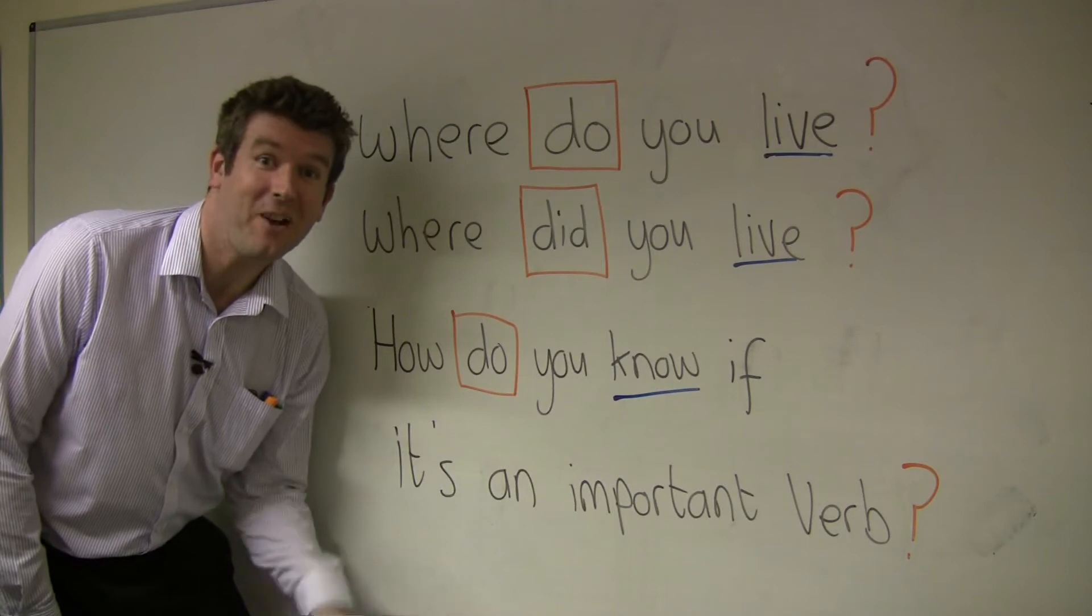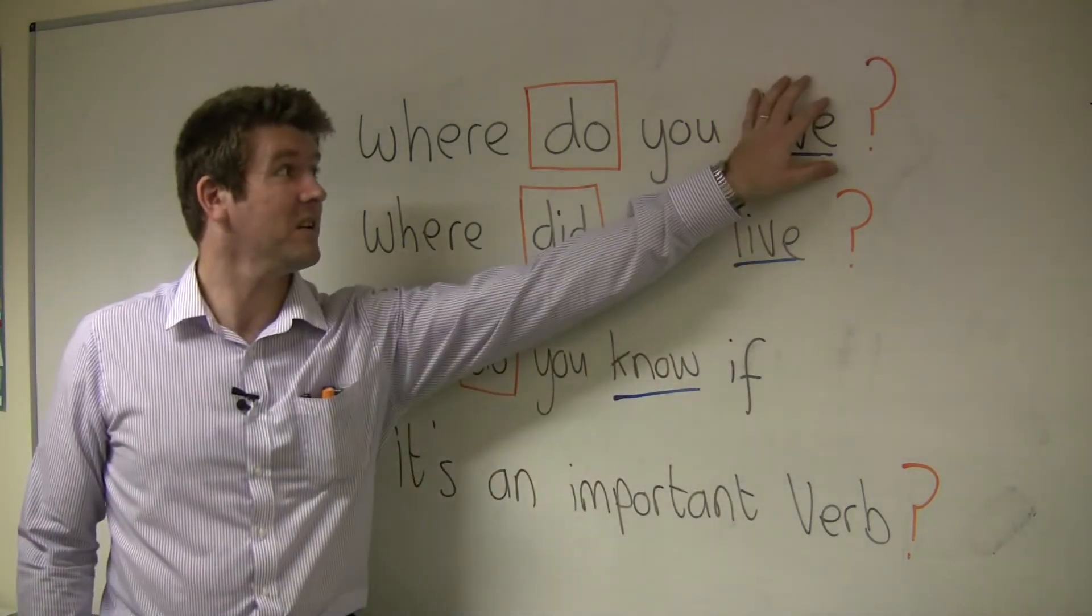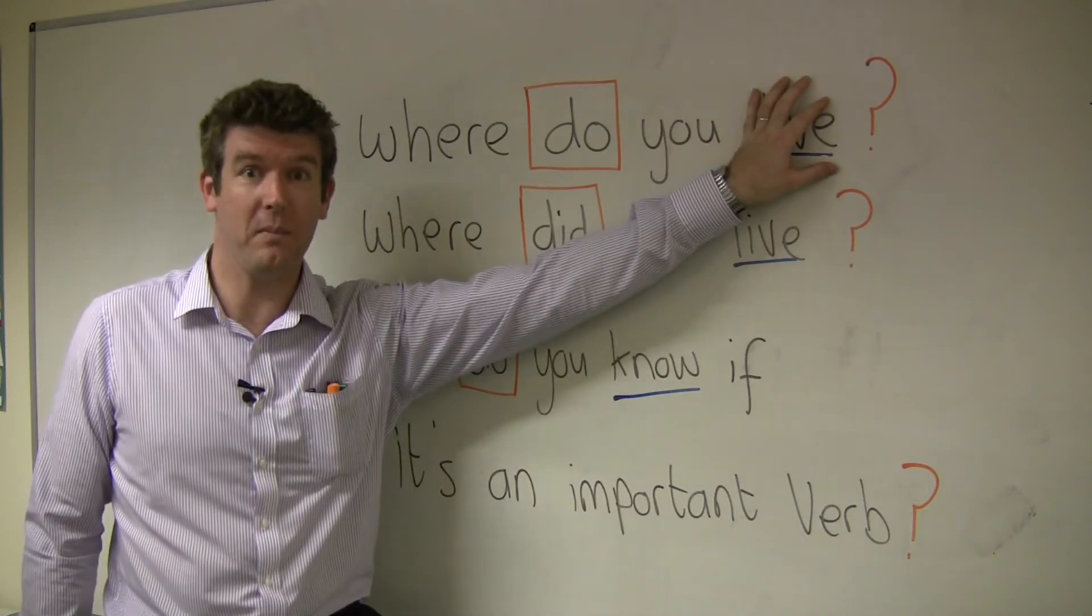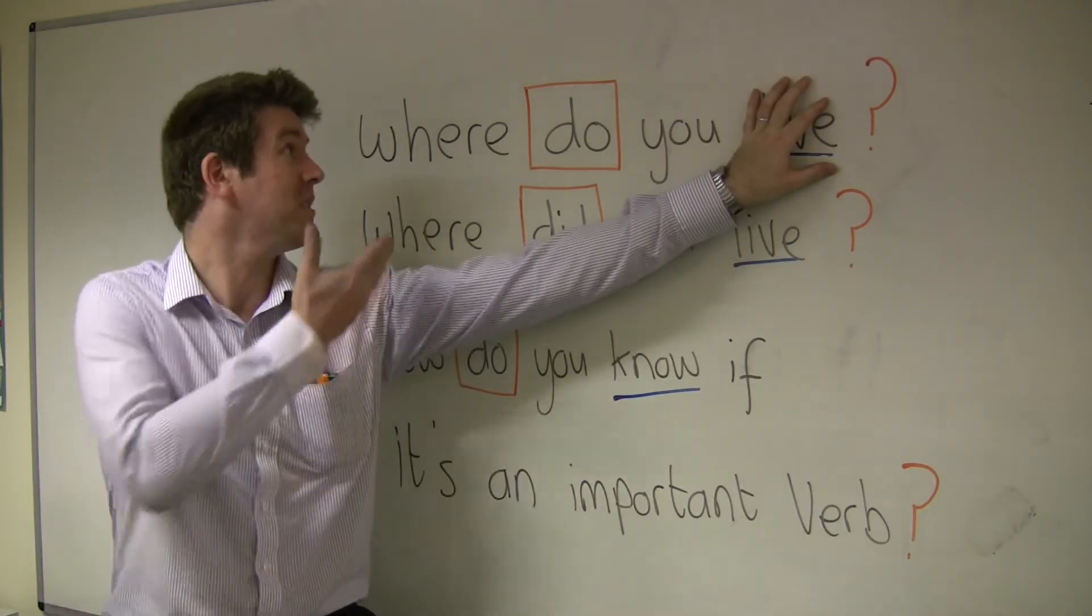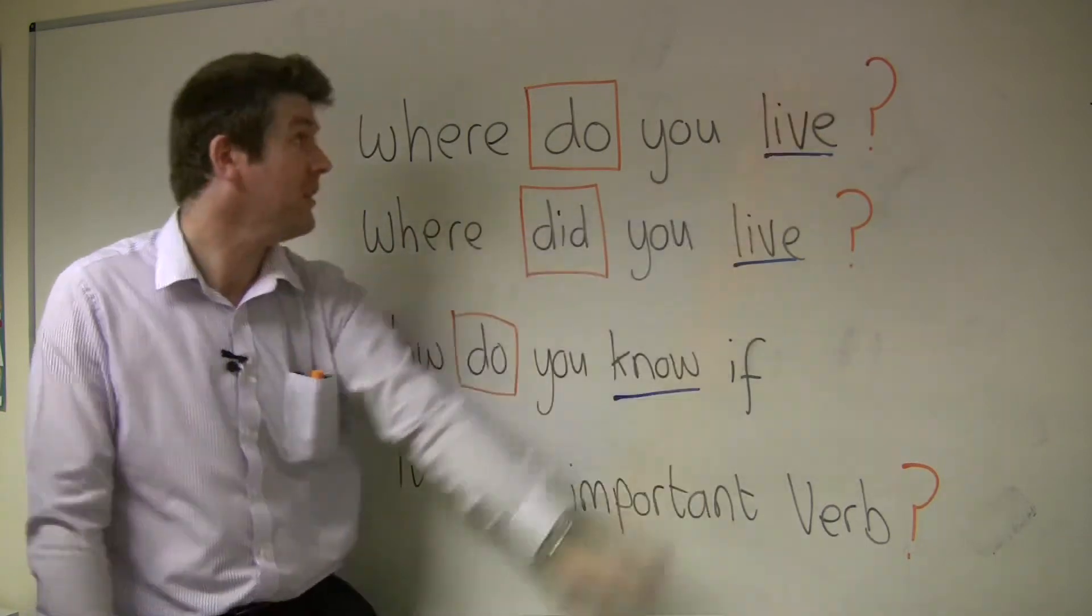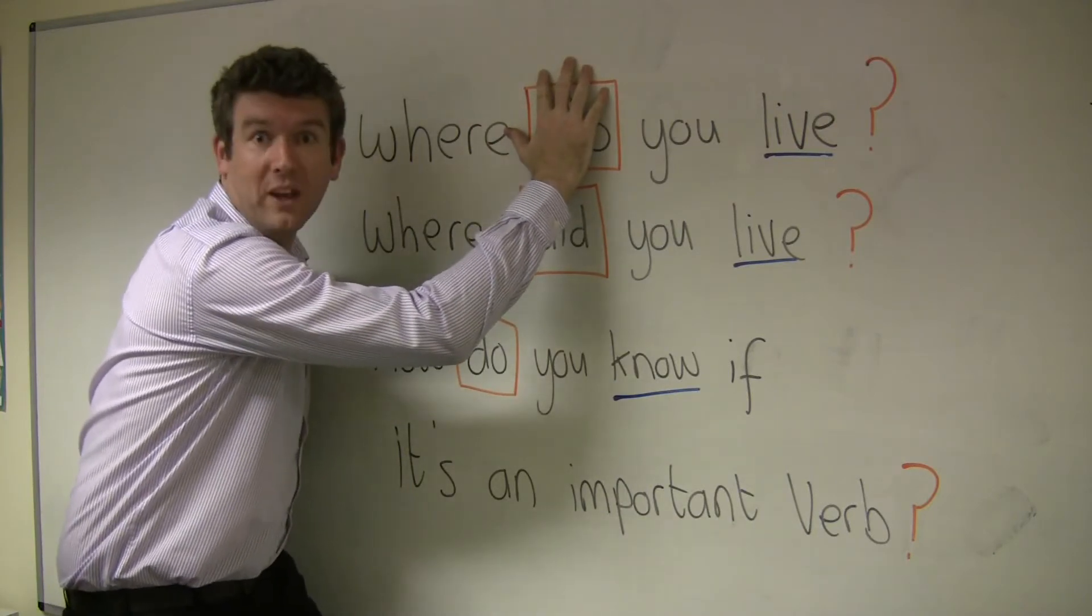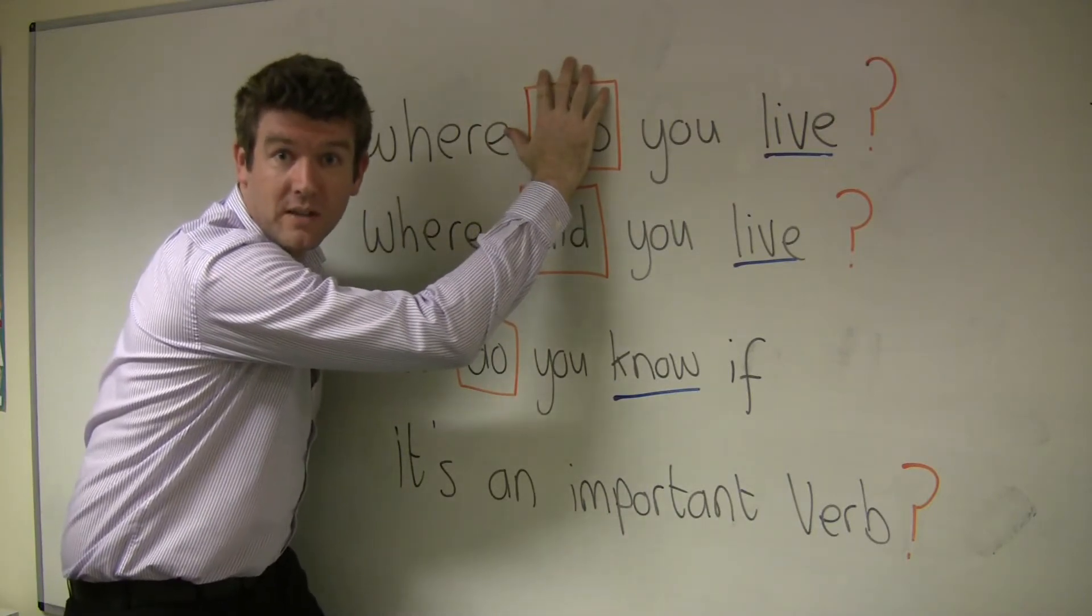Now how do you know if it's an important verb? It's easy. If you cover the main verb, the important verb, and you say the question 'where do you,' no meaning. But if you cover the auxiliary verb and you look at the question 'where you live,' you still understand.